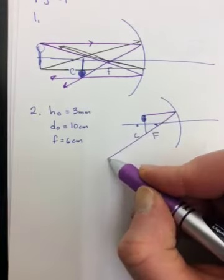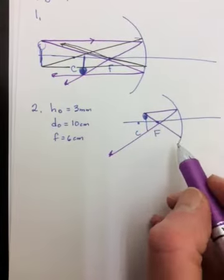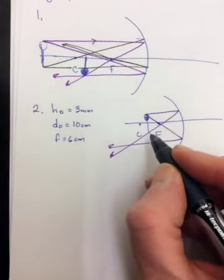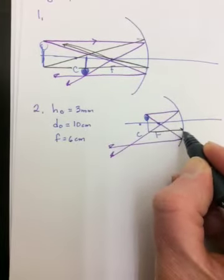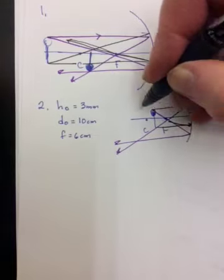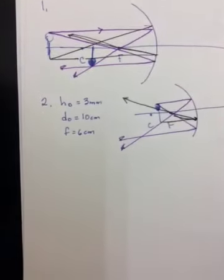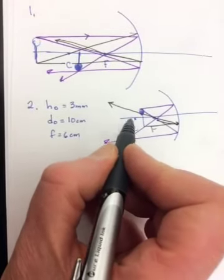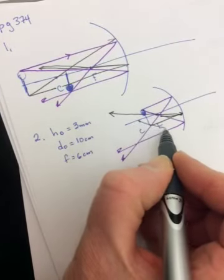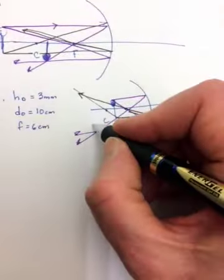Going from the top in parallel to the principal axis out to F. In through F, out parallel to the principal axis. Same idea with the bottom, in parallel to the principal axis. Maybe I can do in to C. The way I'm holding it, it's hard to draw a straight line. I can move the paper, brilliant. In to C, back to C. So the image this time is gonna be bigger and beyond C.